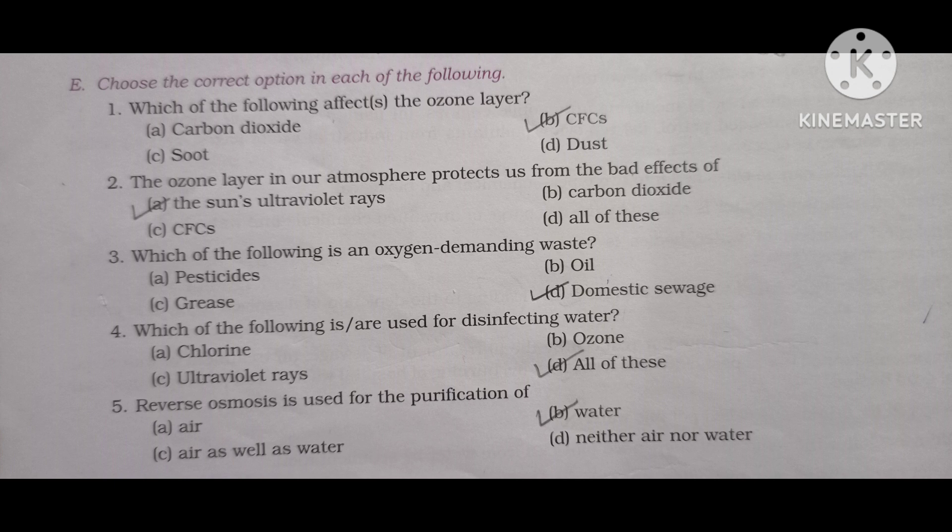Number 2: The ozone layer in our atmosphere protects us from the bad effects of. Options are the sun's ultraviolet rays, carbon dioxide, CFCs, all of these. So correct answer is A, the sun's ultraviolet rays.